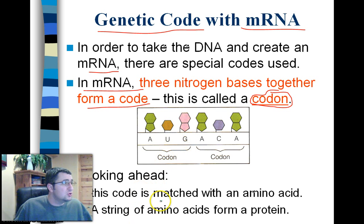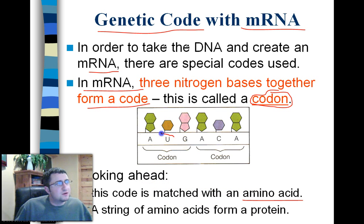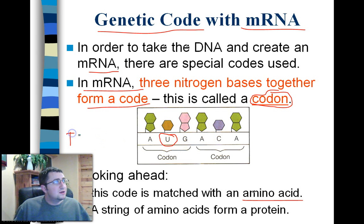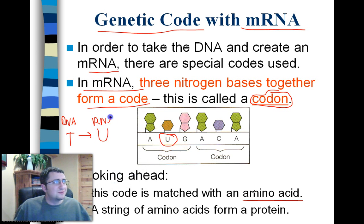That codon is going to allow us to signal for a specific amino acid in our protein. So the code is matched with an amino acid. You might be wondering where this U is coming from. You may think back that the nitrogen bases in DNA are A, T, G, and C. Well, what happens is when we make RNA, we replace T with U. So anywhere in DNA where there was a T, it now becomes a U in RNA. It's almost the same thing — we just call it U for uracil.